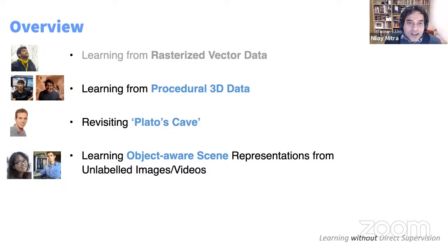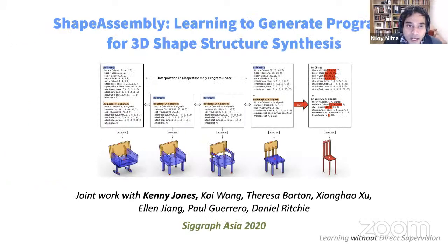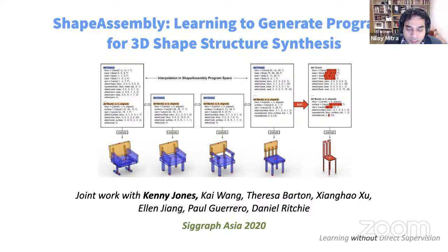Moving from the vector domain to 3D — but 3D in the form of programs that generate 3D. Each of these objects from the StructureNet dataset is a collection of parts along with their structural hierarchy. The novelty here is the information is encoded in the programs. We try to come up with a latent space of programs, and optimizing in that latent space leads to new programs that when executed produce new shapes.